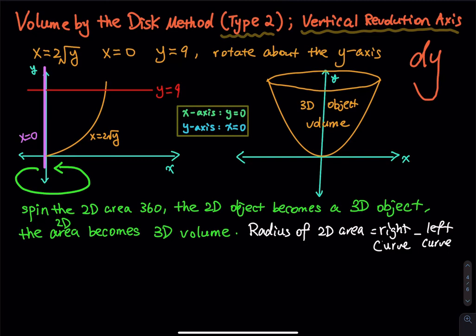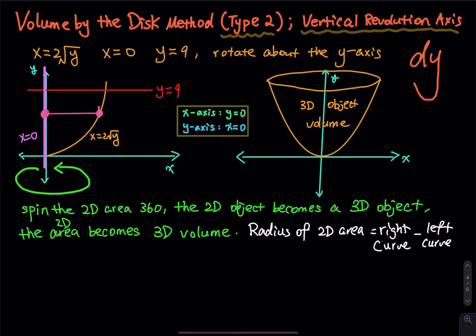To find the area, you do NOT use top curve minus bottom curve. You have to use the right curve minus the left curve. Using top minus bottom would give you y = 9 minus x = 2√y, which doesn't work because one is a y-function and the other is an x-function. So we draw a horizontal rectangle to identify which curve is on the right and which is on the left.